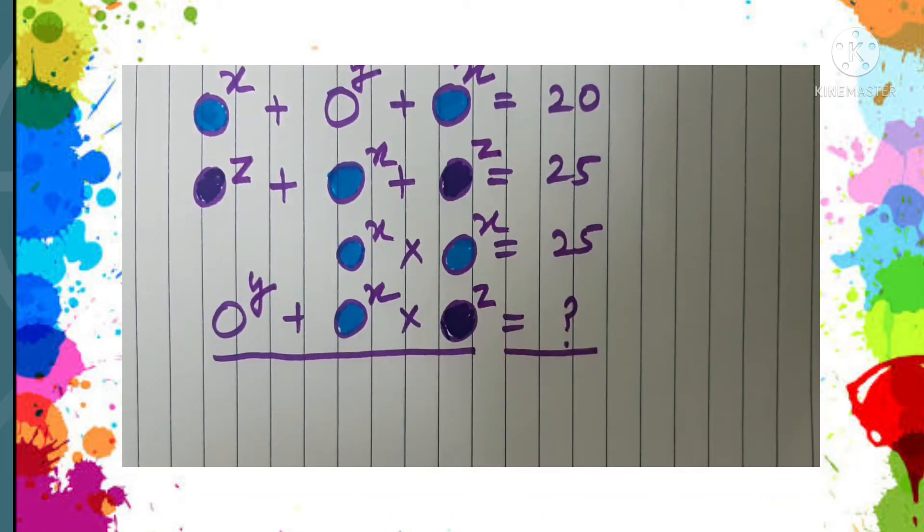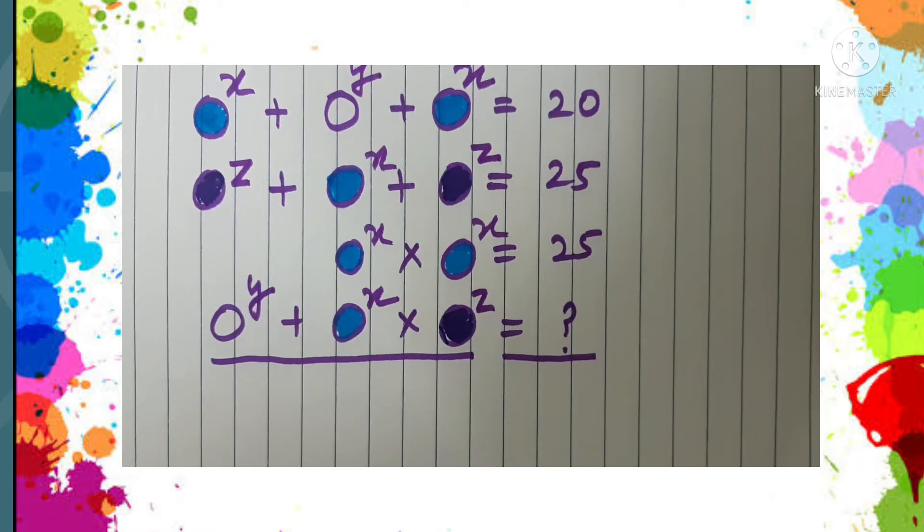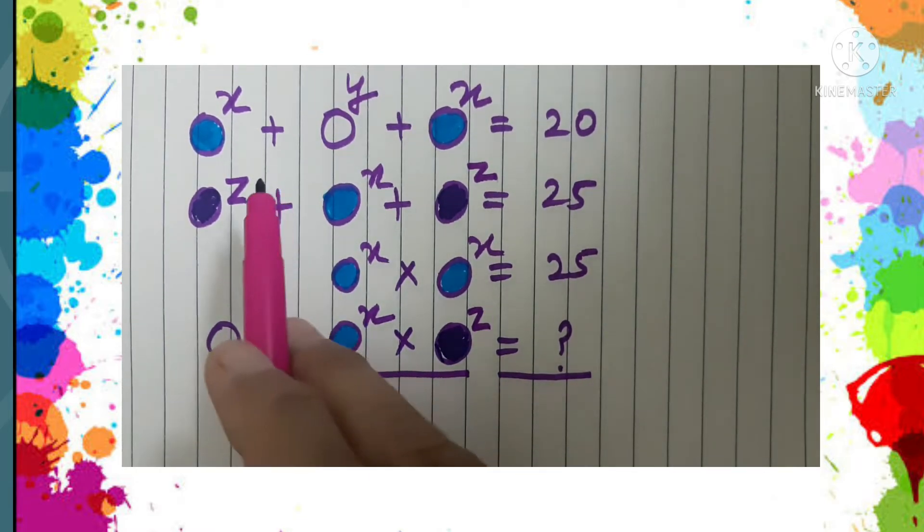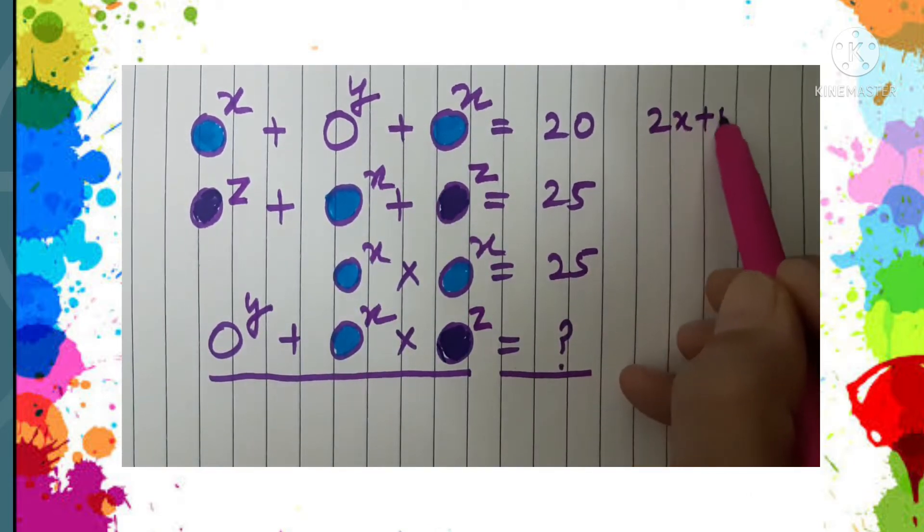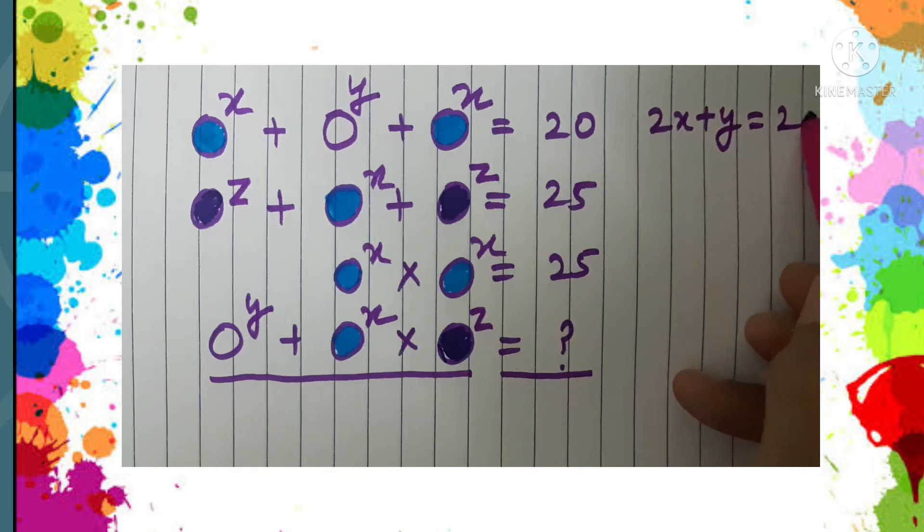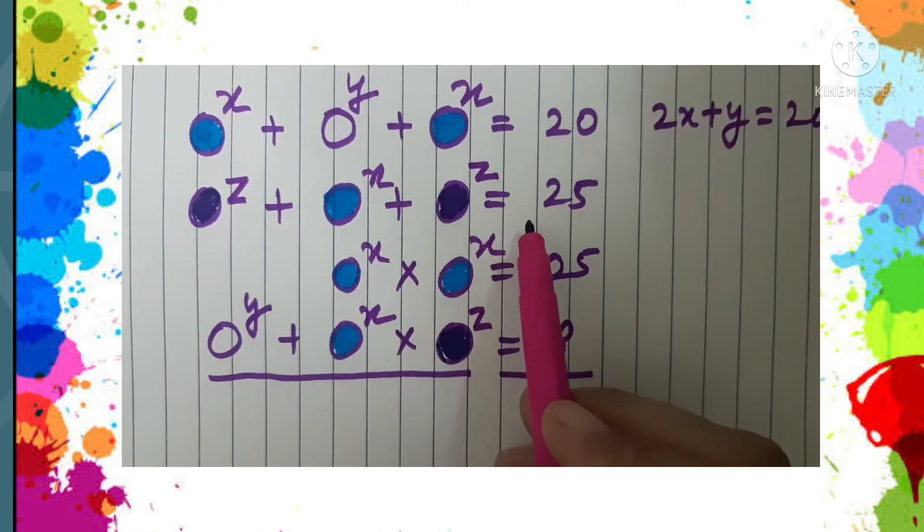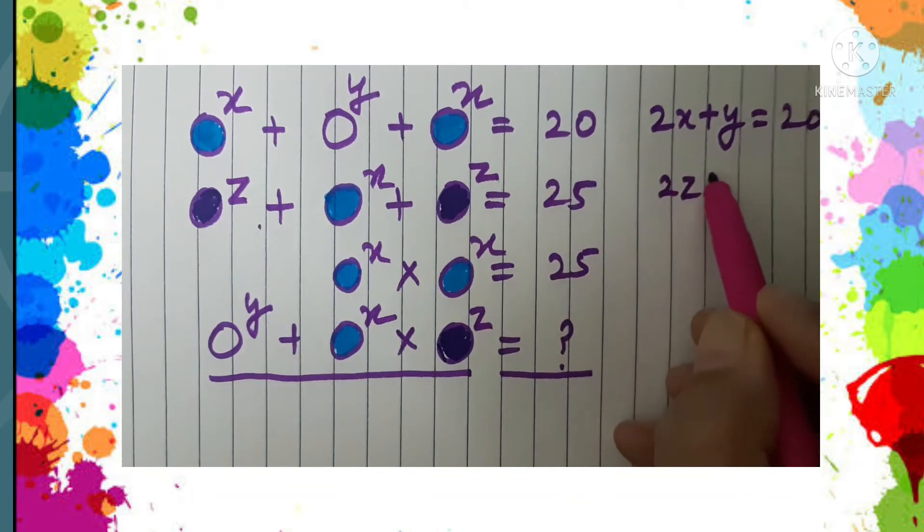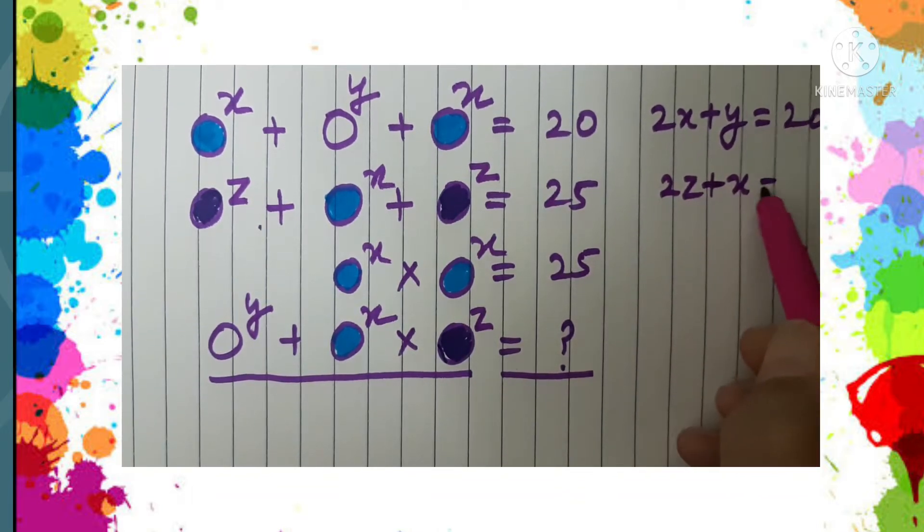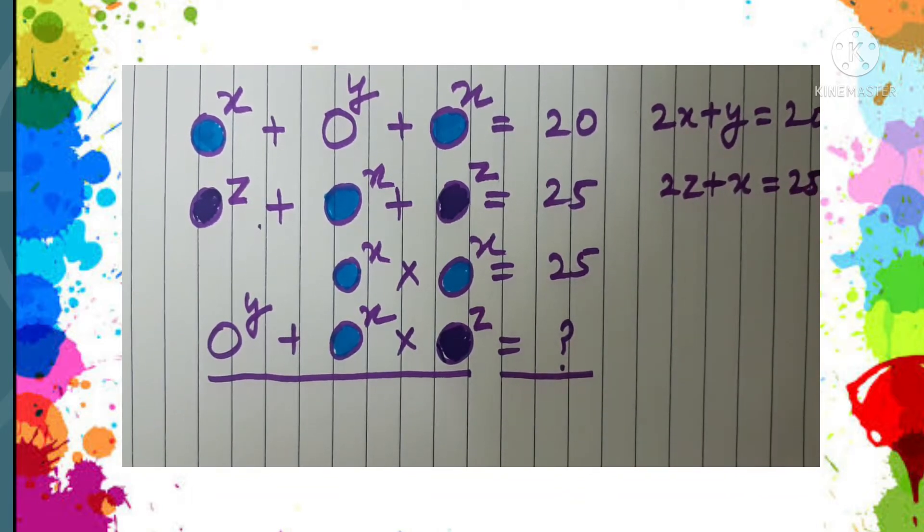Now we will be framing the equations. From the first row we see that we get the equation 2X plus Y equals 20. From the second row we get the equation 2Z plus X equals 25, and from the third row we see that X into X, that is X squared, is 25.